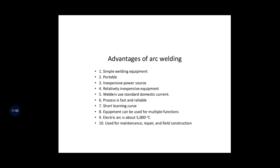Advantages of arc welding: the equipment is simple and portable so you can carry it anywhere; the power source is relatively inexpensive; welders use standard domestic current; the process is fast and reliable; there is a short learning curve; equipment can be used for multiple functions. The electric arc temperature is around 5000 degrees Celsius. It is used for maintenance, repair, and field construction, and dominates in the maintenance and repair industry. It can weld ferrous and non-ferrous metals such as aluminium, nickel, and copper.